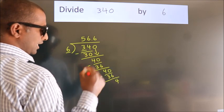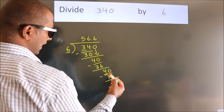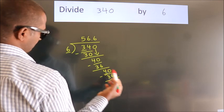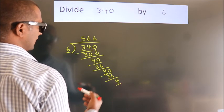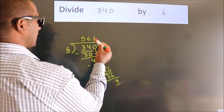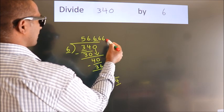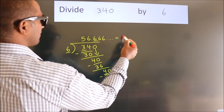Now you observe. We had 4 here, and we got 4 again. That means this number keeps on repeating. So this is our quotient.